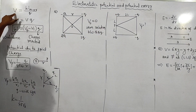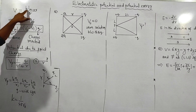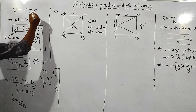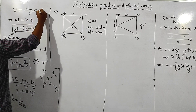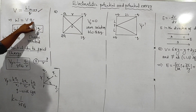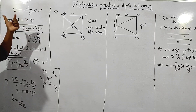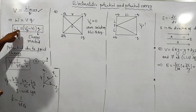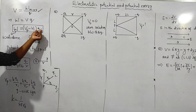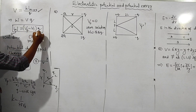Let us move on to the definition of potential. Electric potential is work done per unit charge. The formula is: work done is equal to potential into charge. Sometimes potential is referred to as potential difference, so work done is equal to potential difference into charge. This is very important — the charge is moving.